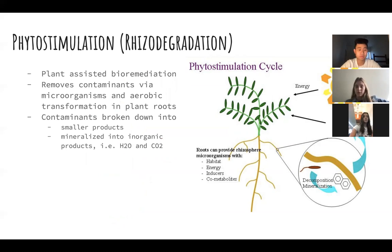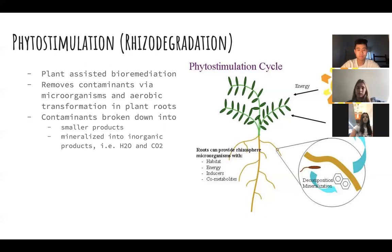Phytostimulation, also known as rhizodegradation, is the process by which plants degrade contaminants in the soil. This is basically plant-assisted bioremediation. The contaminants in the soil are broken down by microorganism activity from the roots and aerobic transformation. The contaminants are broken down into smaller products that are no longer considered contaminants, or they are mineralized into inorganic products such as water and carbon dioxide. These inorganic products can then be recycled back into the plant system, and groundwater can also become uncontaminated in this way.